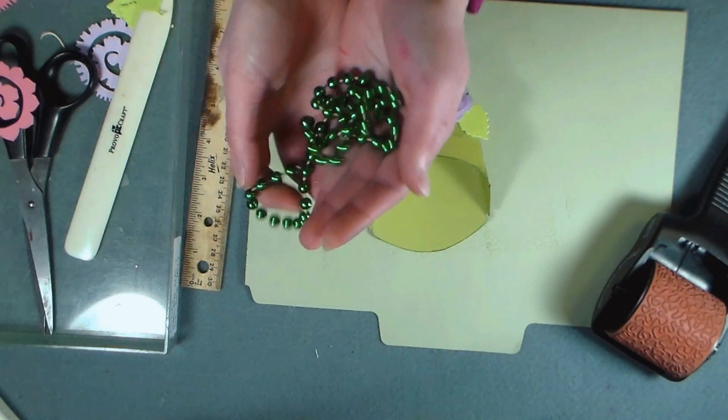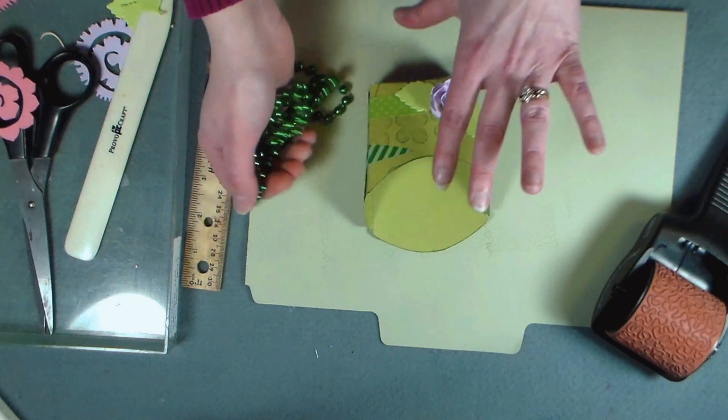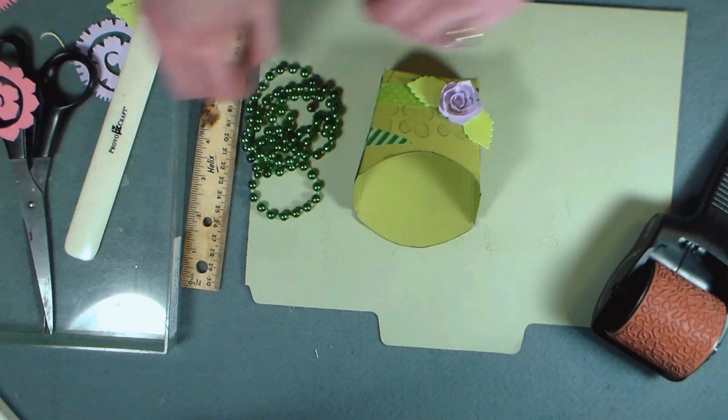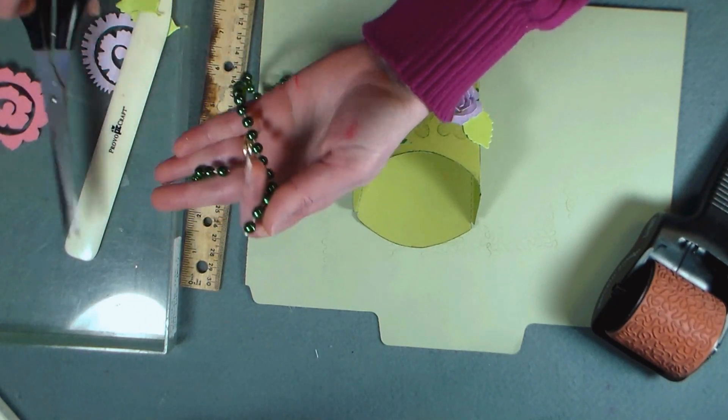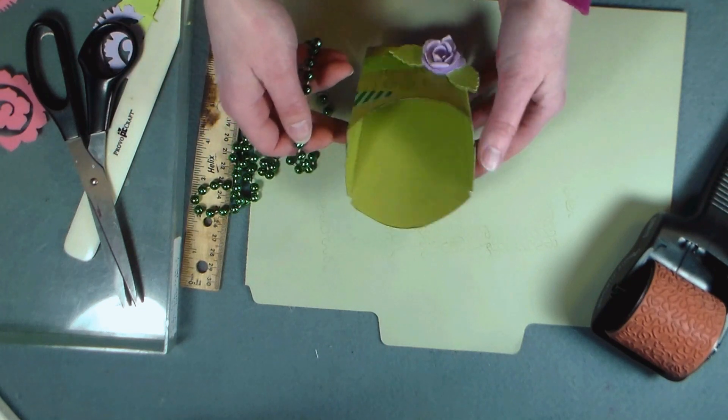Now the theme of the February Love With Food box was Mardi Gras and they sent these really cool sparkly green plastic beads in the monthly kit.